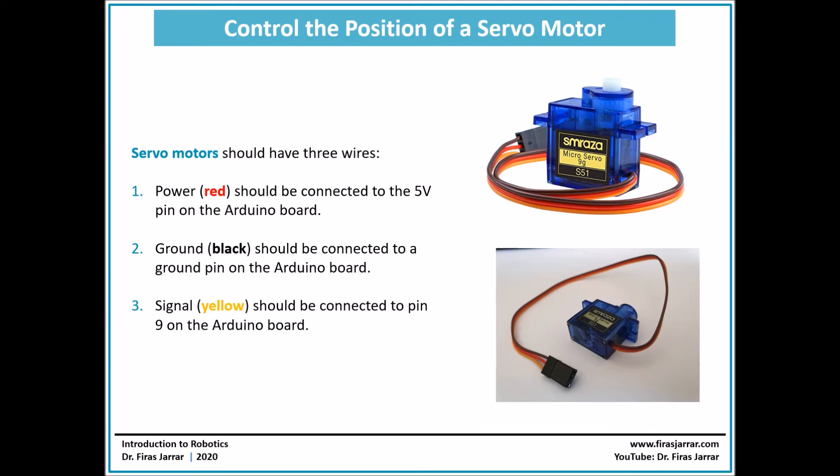Servo motors usually end up with a socket like this one where you can push in jumper wires. You will have three wires: one red wire which should be connected to the 5V pin on the Arduino board, a yellow or sometimes orange wire that should be connected to one of the pins on the Arduino board, in this case to digital pin number 9, and a black wire to ground. So as a summary, we'll have to connect three wires: red corresponding to voltage, black to ground, and yellow to the signal.